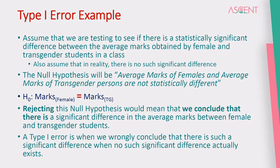Now, we have a null hypothesis. If we reject this null hypothesis, we don't claim a significant difference. So we will conclude that there is a significant difference when no such significant difference actually exists.